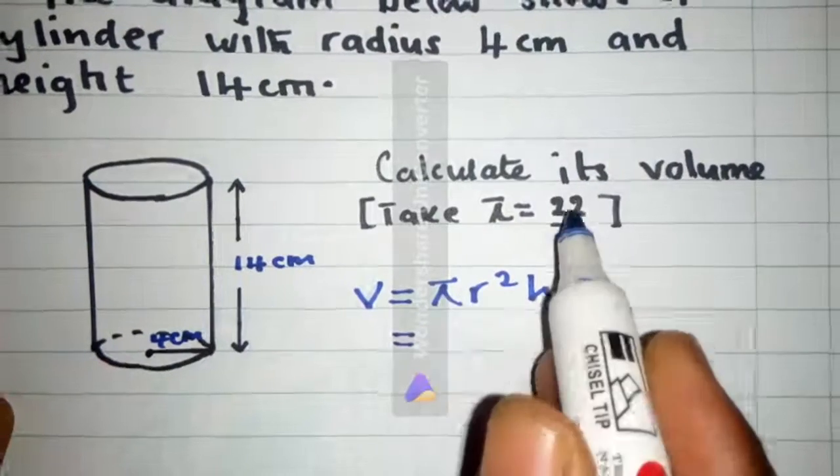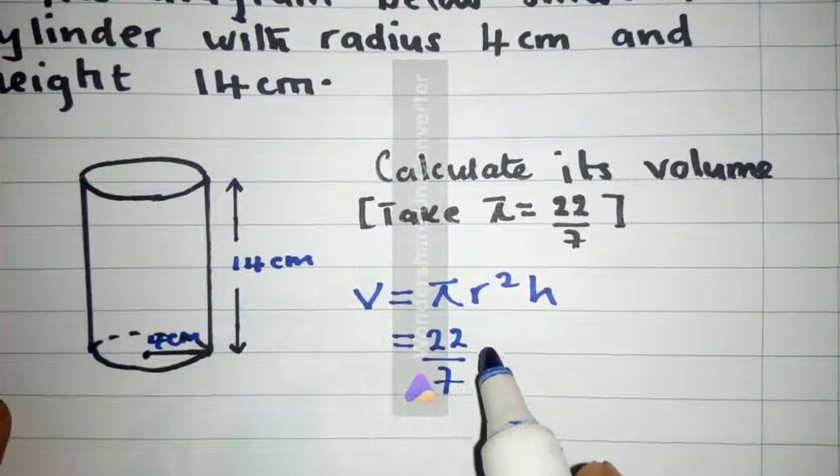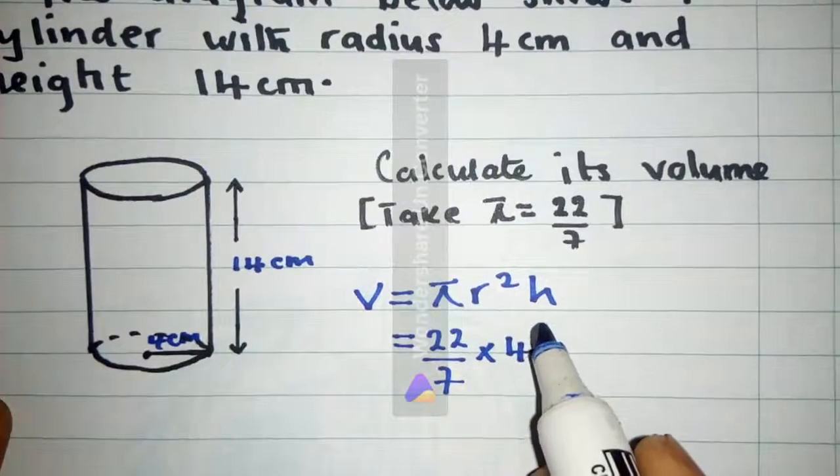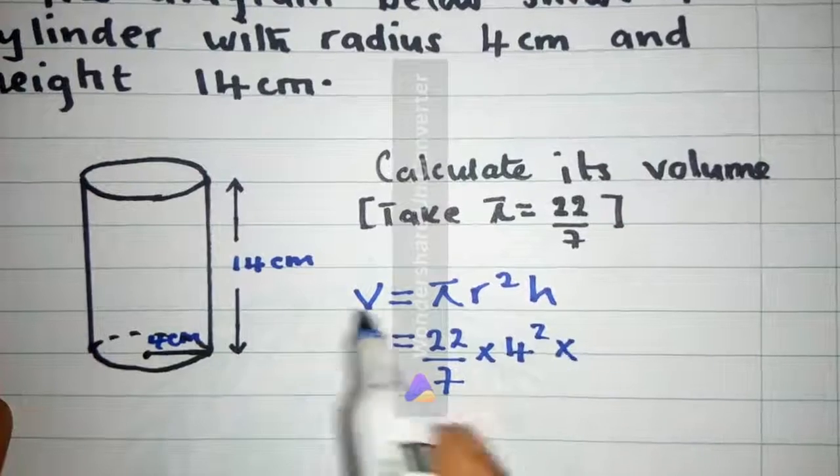Pi we have been told it is 22 over 7 times radius, we will be given it is 4 squared, it is 4 so it will be 4 squared times height, height is 14.